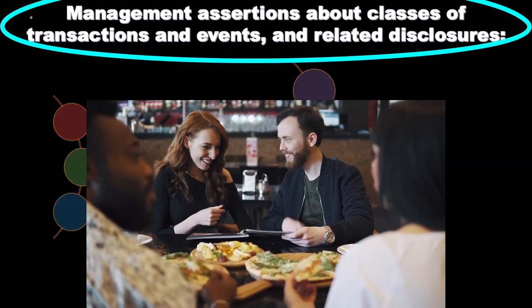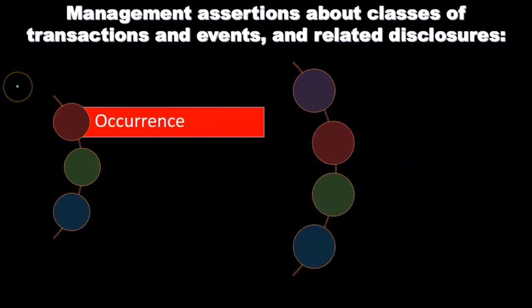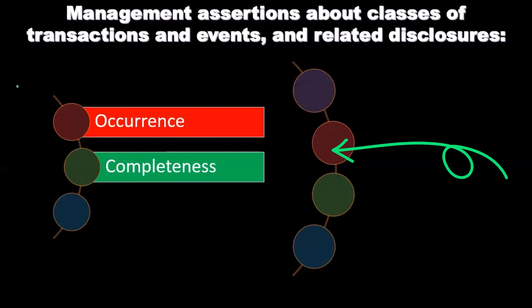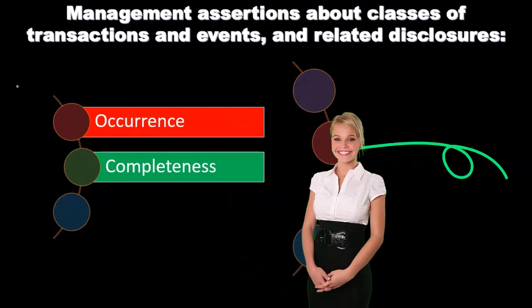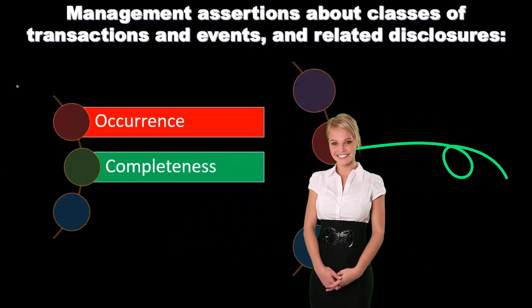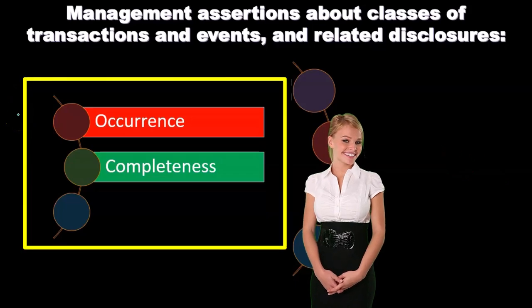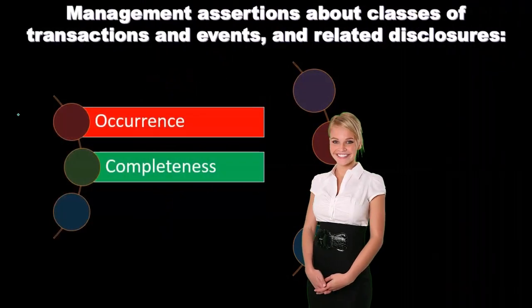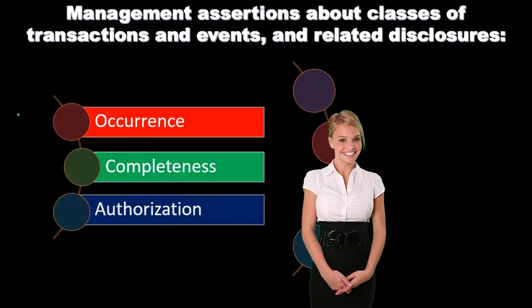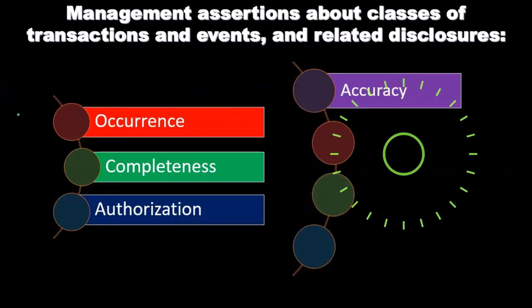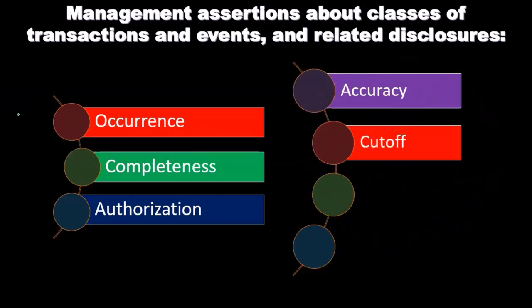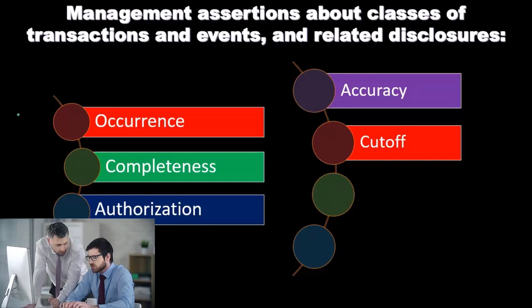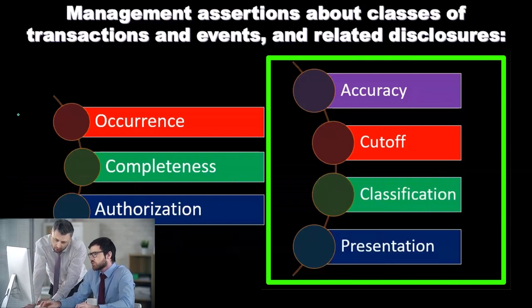Management assertions about classes of transactions and events and related disclosures include: occurrence — things actually occurred; completeness — do we have everything involved in this process; authorization — is there proper authorization; accuracy of the financial statements; cutoff — dealing with year-end timing differences, typically on an accrual basis as opposed to a cash basis; and classification and presentation.